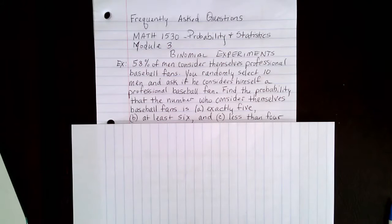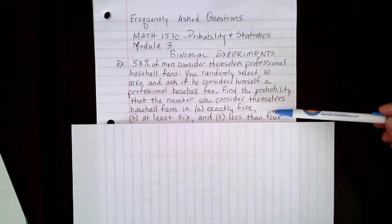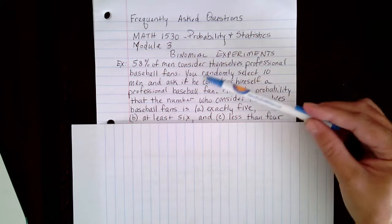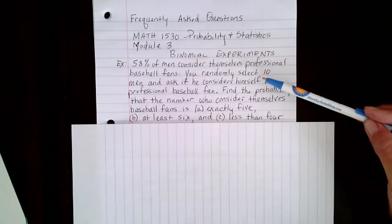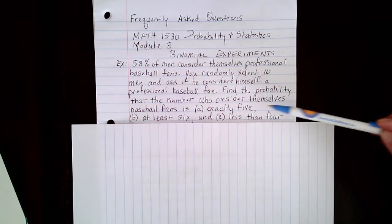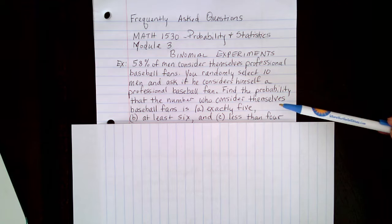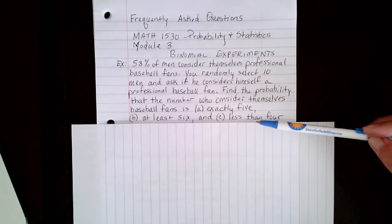This is a frequently asked question from Math 1530, Probability and Statistics, in Module 3. This problem is over binomial experiments. It says: 58% of men consider themselves professional baseball fans. You randomly select 10 men and ask if he considers himself a professional baseball fan. Find the probability that the number who consider themselves baseball fans is exactly 5, at least 6, and less than 4.